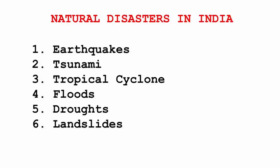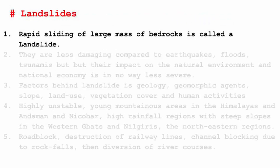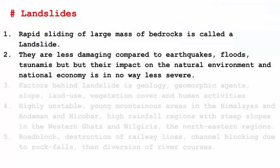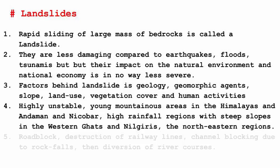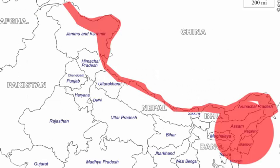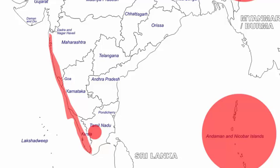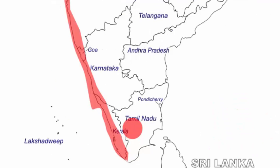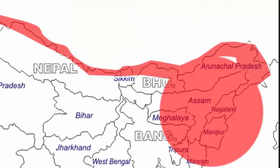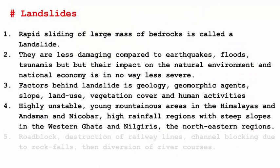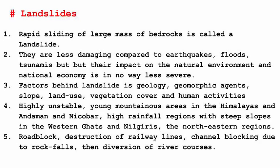The last form of disaster is landslides. Rapid sliding of large masses of bedrock is called a landslide. Even though landslides are less damaging compared to earthquakes, floods, and tsunamis, their impact on the natural environment and national economy is no less severe. Places that are highly unstable include young mountain areas like the Himalayas, Andaman and Nicobar, high rainfall regions with steep slopes like the Western Ghats and Nilgiris, and the northeastern region. Consequences of landslides include roadblocks, destruction of railway lines, channel blocking due to rockfalls, and diversion of river courses.